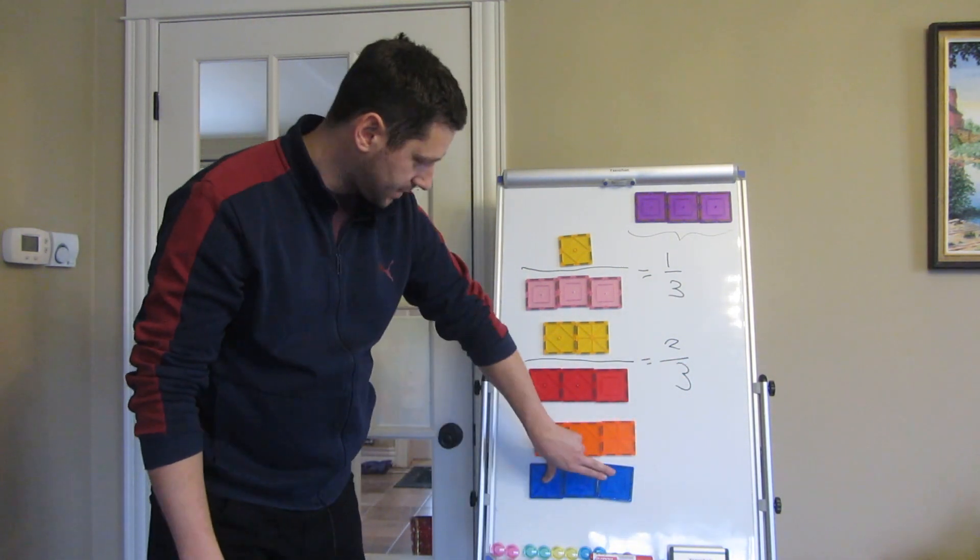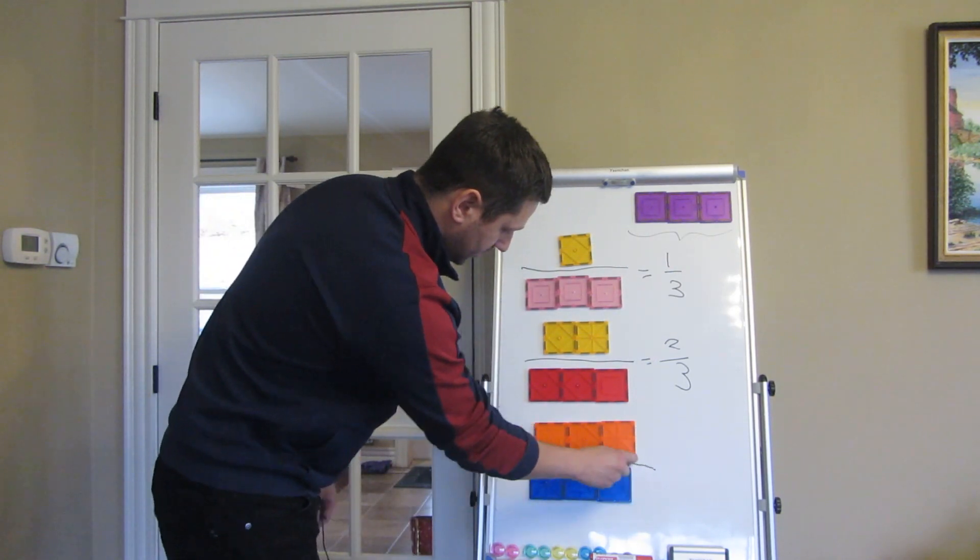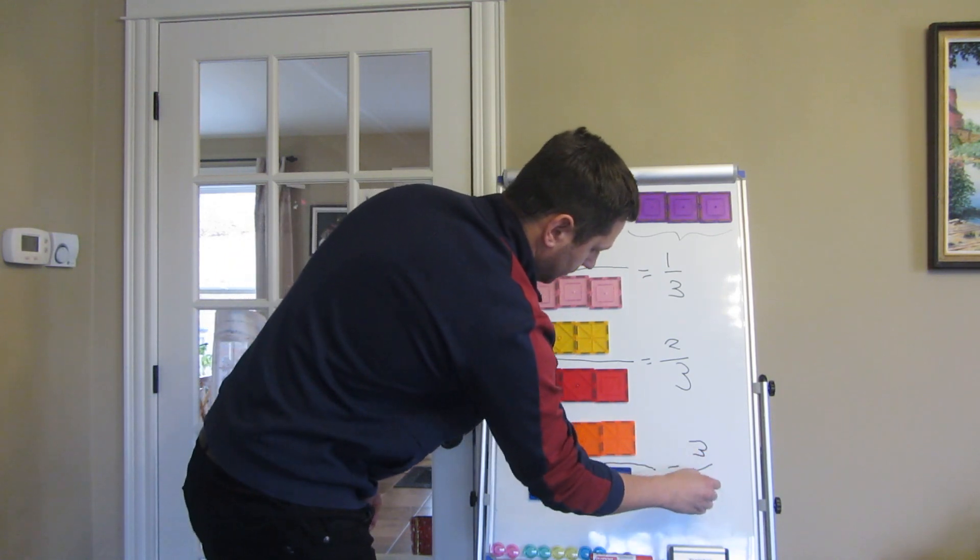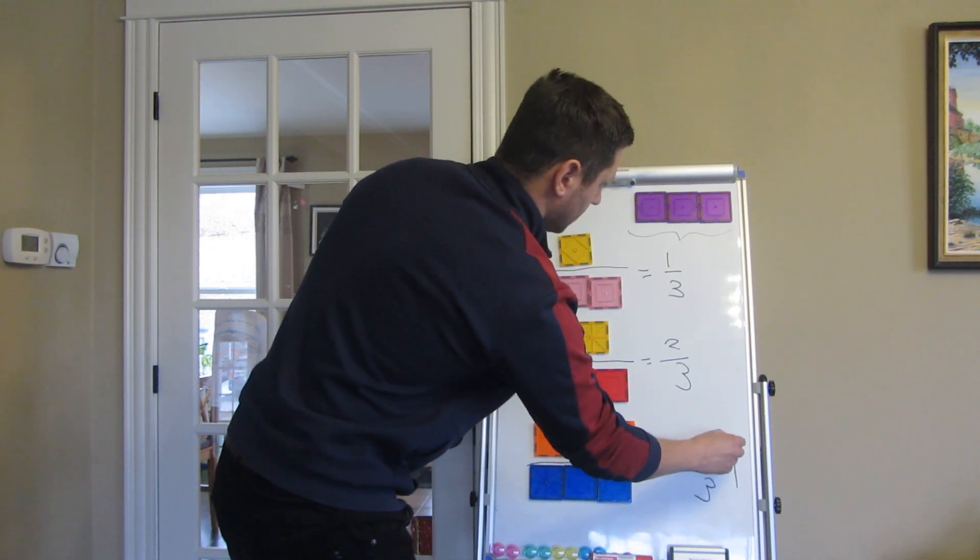And the last example, we will take all three squares. So we can see it will be three out of three, which by the earlier definition equals one.